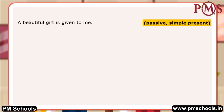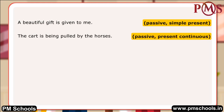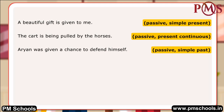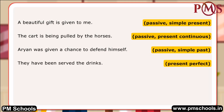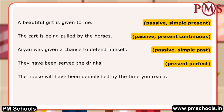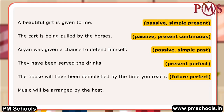A beautiful gift is given to me — passive simple present. The cart is being pulled by the horses — passive present continuous. Aryan was given a chance to defend himself — passive simple past. They have been served the drinks — present perfect. The house will have been demolished by the time you reach — future perfect. Music will be arranged by the host — future simple.